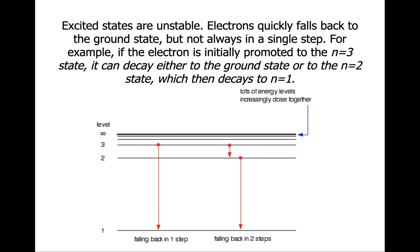So you can see in this diagram that it may fall back to energy level number two first, release a certain amount of energy and wavelength of light, and then fall back from that point back to energy level number one.